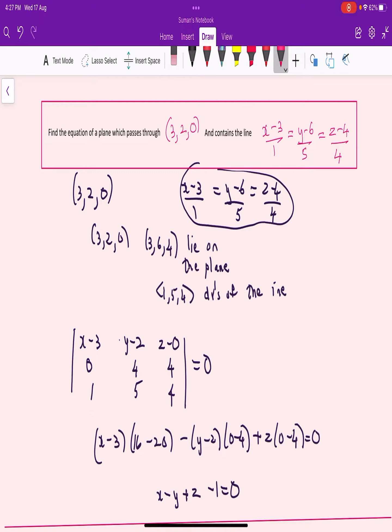Now (3,2,0) lies on the plane and (3,6,4) also lies on the plane, and direction ratios of the normal to this line are 1, 5, 4.